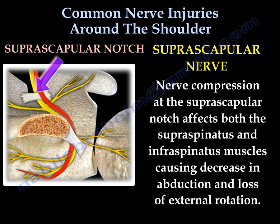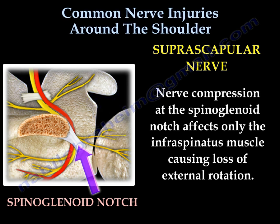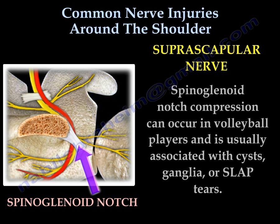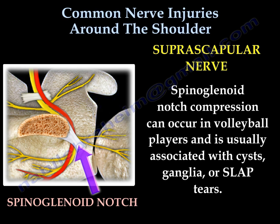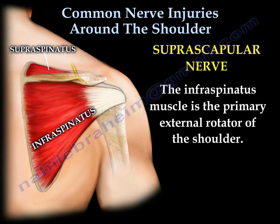Nerve compression at the suprascapular notch affects both the supraspinatus and infraspinatus muscles, causing decreased abduction and loss of external rotation. Compression at the spinoglenoid notch affects only the infraspinatus, causing loss of external rotation. This spinoglenoid notch compression can occur in volleyball players and can be associated with cysts, ganglia, or SLAP tears. The infraspinatus muscle is the primary external rotator of the shoulder.